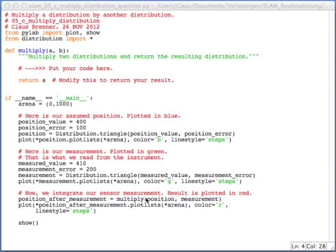And then finally, the multiply function, and this is the function you should implement up here, is called, and it is given both distributions and returns a position after measurement or posterior distribution. And this is plotted as well.